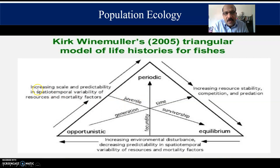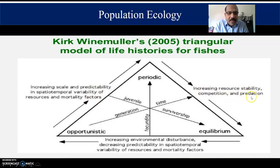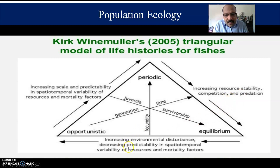The most important concept is the increasing scale and predictability in spatial-temporal variability of resources and mortality factors. This involves spatial-temporal and environmental factors. Key elements include increasing resource stability, competition, and predation. The survival-of-the-fittest theory is relevant here, along with increasing environmental disturbance and decreasing predictability in spatial-temporal variability of resources and mortality factors.